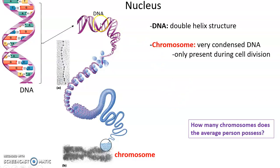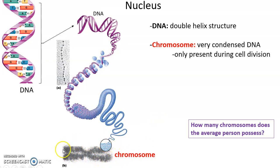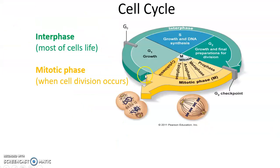DNA is a double helix structure that gets condensed into a dense structure called a chromosome. A chromosome is a very dense, condensed DNA structure. We only see chromosomes during cell division. The average human has 46 chromosomes — 23 pairs.